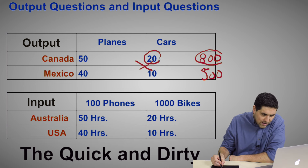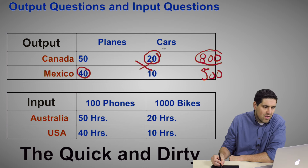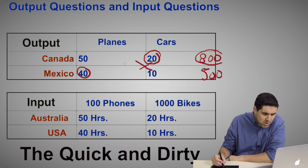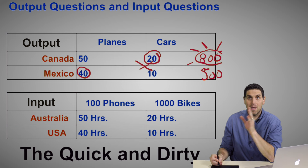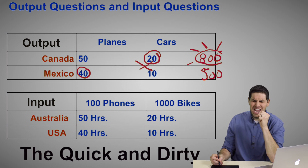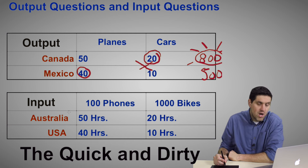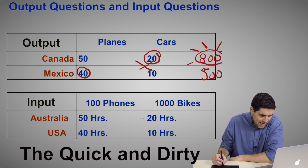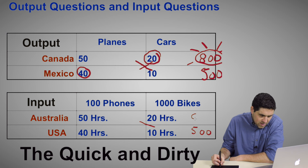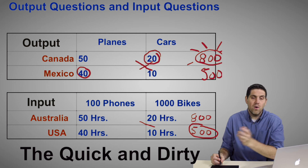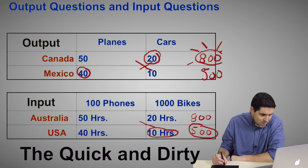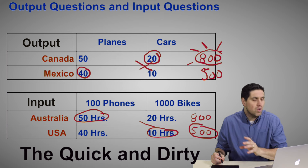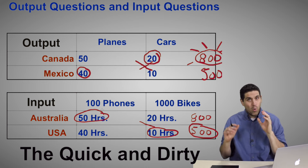For the input question with Australia and the U.S., you do the same thing: 50 times 10 equals 500, or 40 times 20 equals 800. But this time you want the smaller number — 500 — because you want to use fewer hours. So the U.S. should be producing the bikes, and Australia should be producing the phones. You could do all the other calculations if you wanted to, but this is a quick and dirty way to get the right answer.